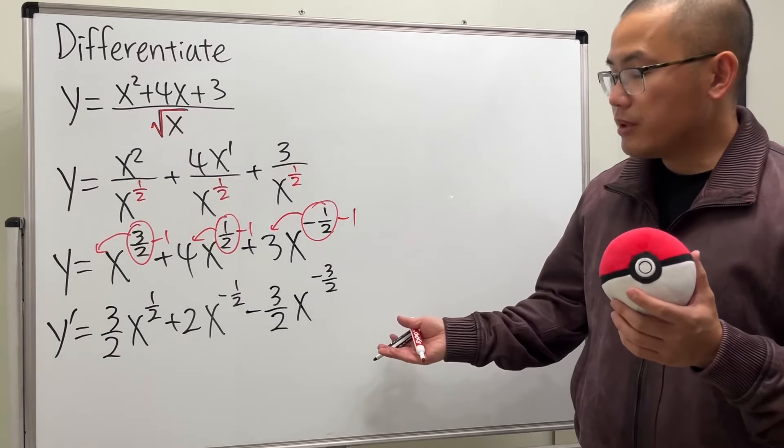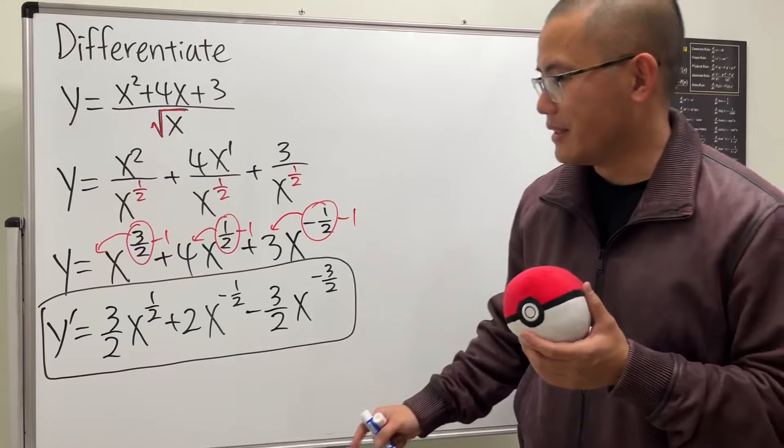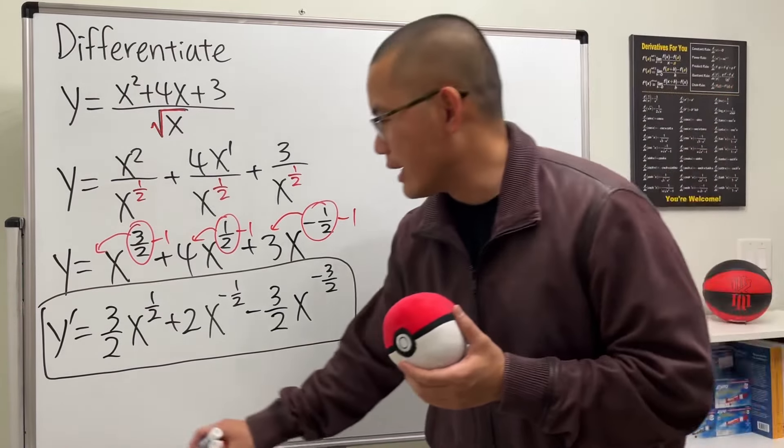So that's pretty much it. However, if you look at the answer in the back of the book, they did write it back in the square root form for this particular question. So let me show you guys how we can do that.